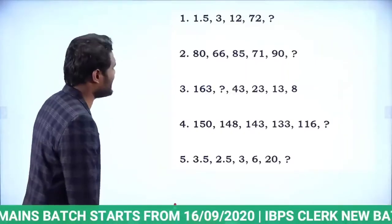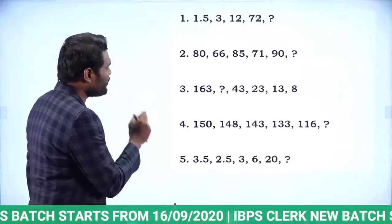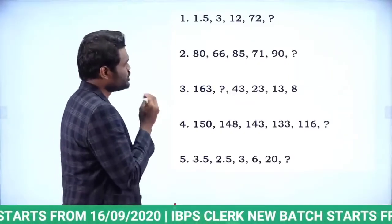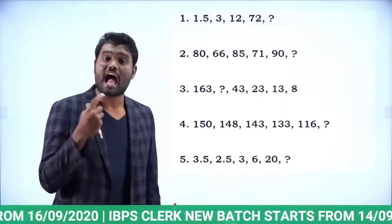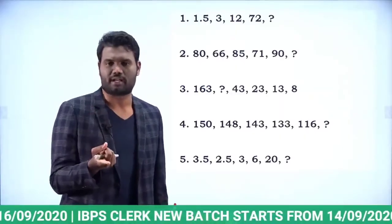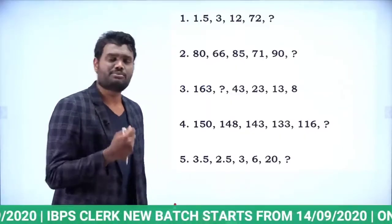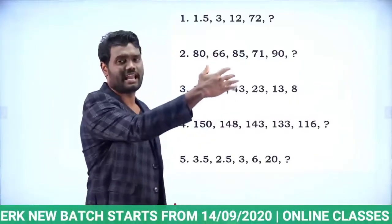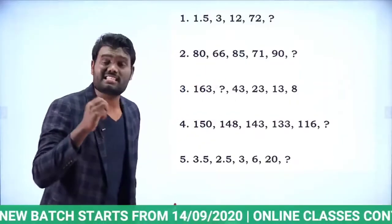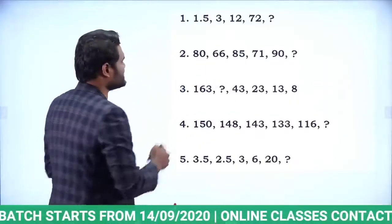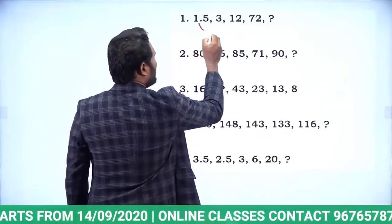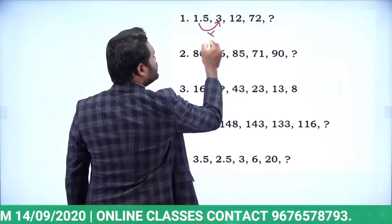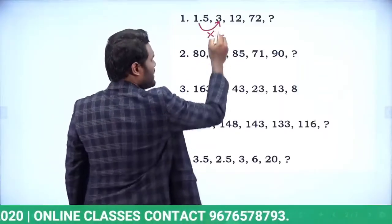The first question gives the series: 1.5, 3, 12, 72, and question mark. The series is gradually increasing. If you observe, 1.5 multiplied by 2 is nothing but 3.